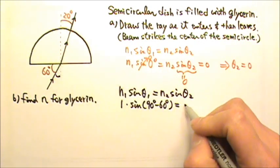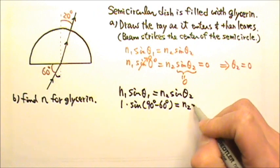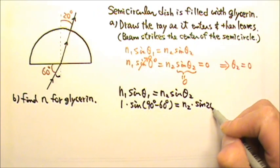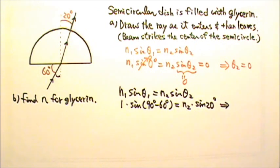And then we don't know the N2, that's what we are looking for. But we know the angle here is 20 degrees. So we'll get N2 is 1.46, and that's the index of refraction for glycerin.